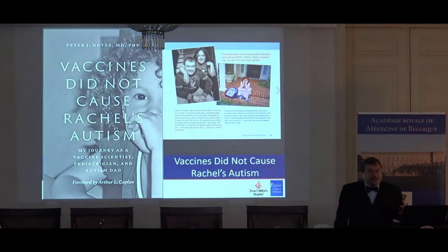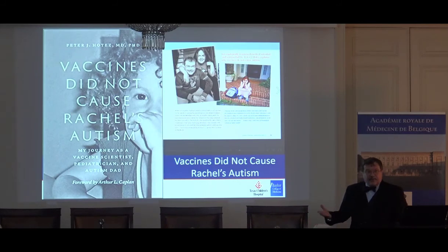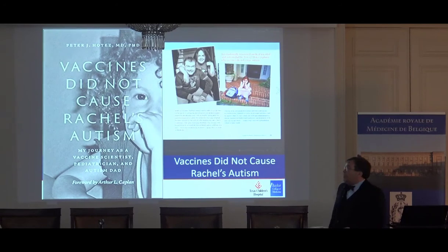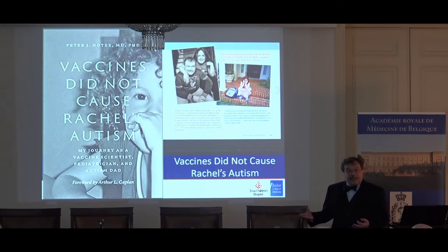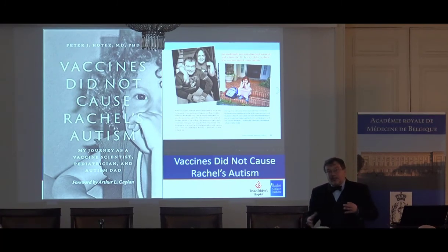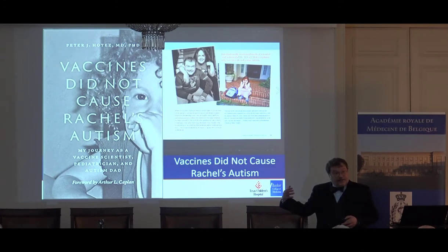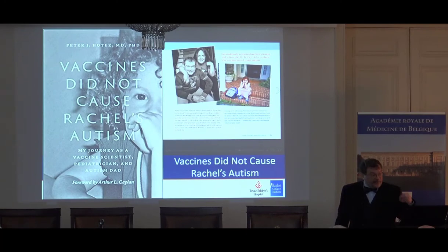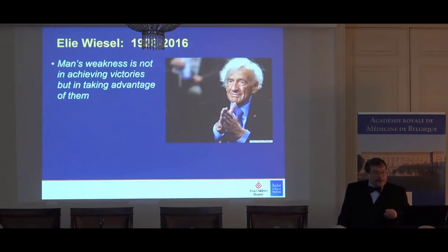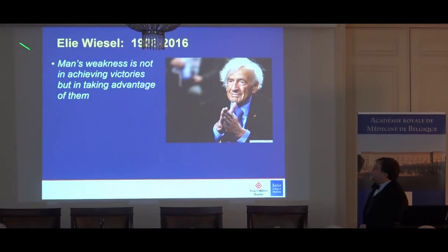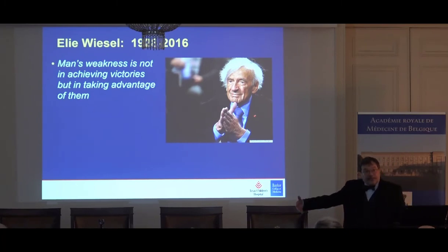One of the things we're doing is I have a new book coming out — my most personal one. To fight the anti-vaccine movement, it's called 'Vaccines Did Not Cause Rachel's Autism,' addressing what it's like to be an autism parent while combating anti-vaccine misinformation. It's not easy because it's very personal and because there is an aggressive, well-organized anti-vaccine movement. I'll close with a quote from Elie Wiesel: 'Man's weakness is not in achieving victories but in taking advantage of them.' We're near elimination of measles, only to let it come back. We're making great progress on neglected tropical diseases, only to see war, conflict, and shifting poverty allow them to return.